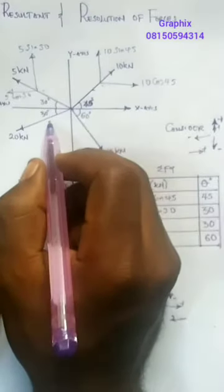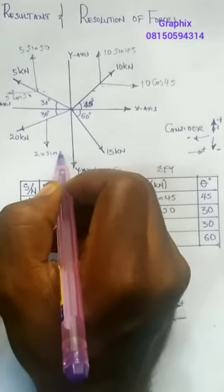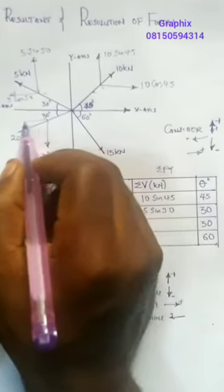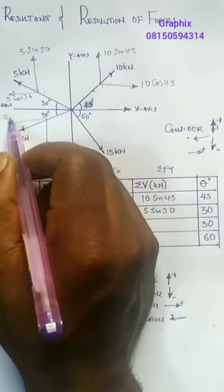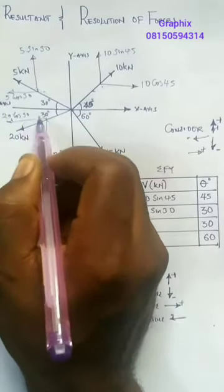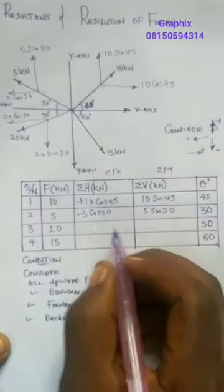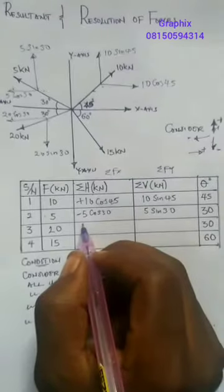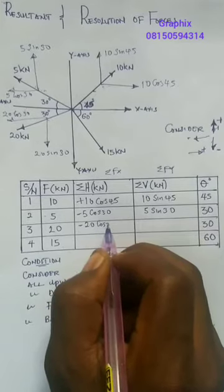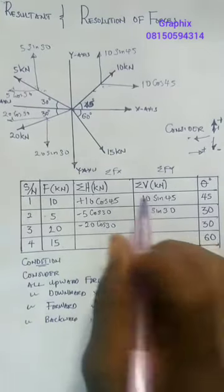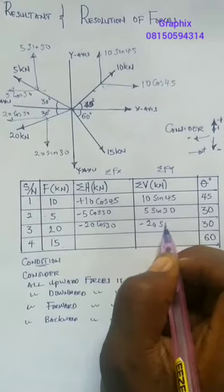We go to the next force. We do the same thing here — this force is coming down, and that will give me 20 sin 30 for the vertical and 20 cos 30 for the horizontal. The horizontal force is facing left, so it will be minus 20 cos 30. And the vertical component is facing down, so it will be minus 20 sin 30.